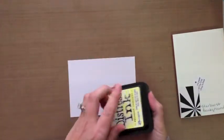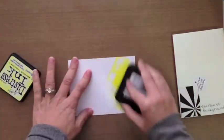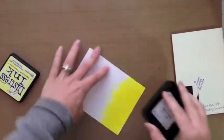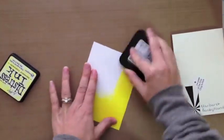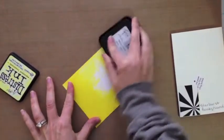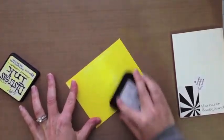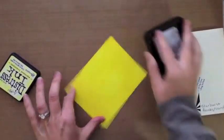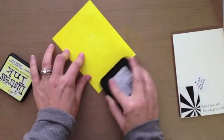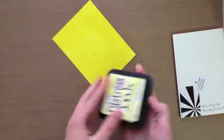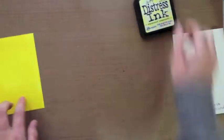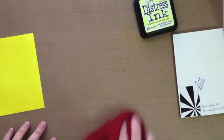The first thing I'm going to do is just ink up this cardstock. This is just regular Neenah Solar White cardstock and I'm just going to apply the ink directly to the page, to the cardstock. This is the Squeezed Lemonade. This is from one of the seasonal distress ink pads.